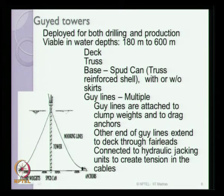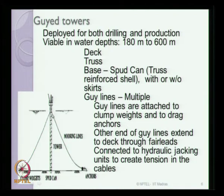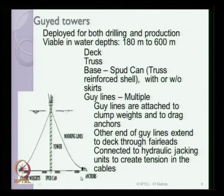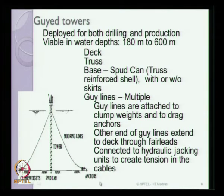The tower is anchored to the seabed in addition to the spud can support by means of cables called mooring lines. These mooring lines are of catenary type profile, connected to the tower at a specific point called the fair lead. The point where the mooring line touches the foundation is called the touch down point, where anchors and clump weights are provided. The mooring line passing through the fair lead is connected to a hydraulic jacking system on the deck where the required tension is applied.